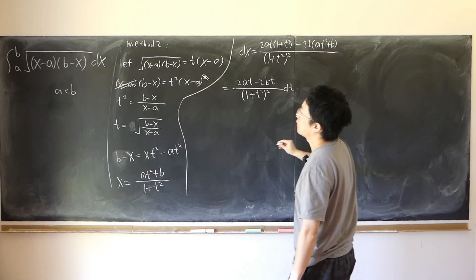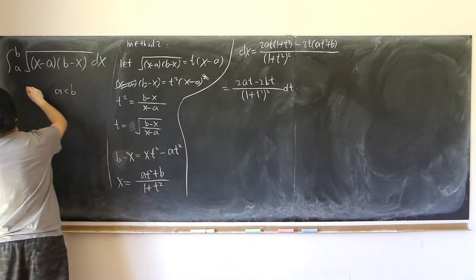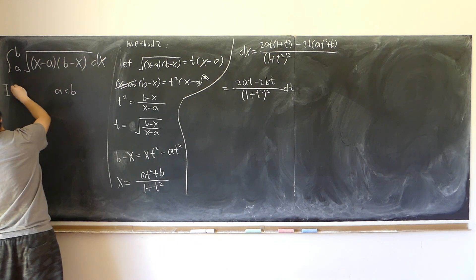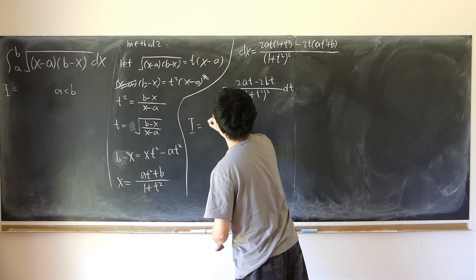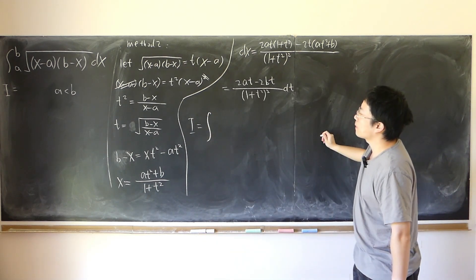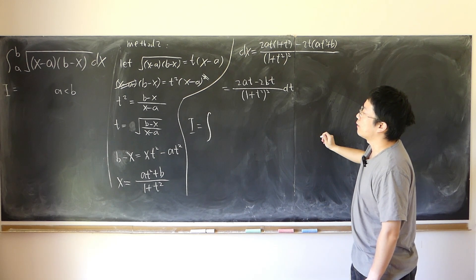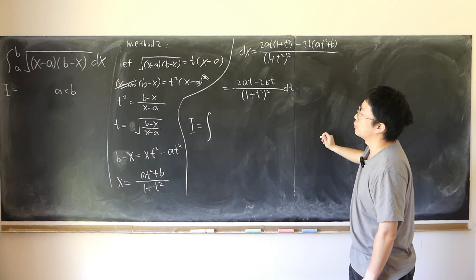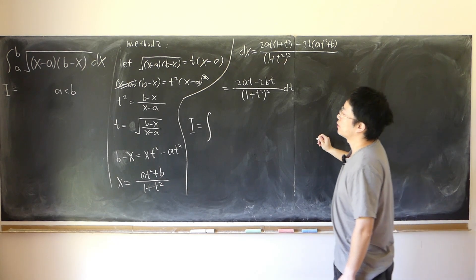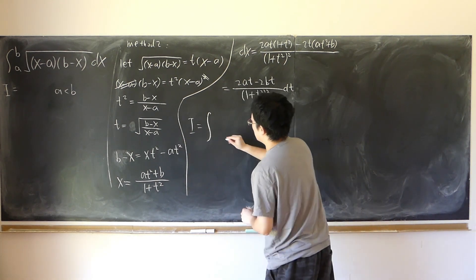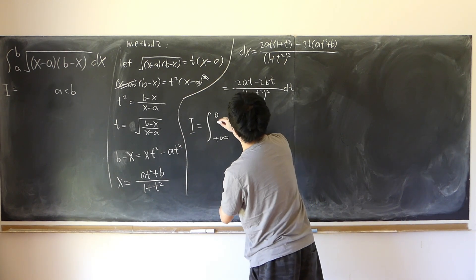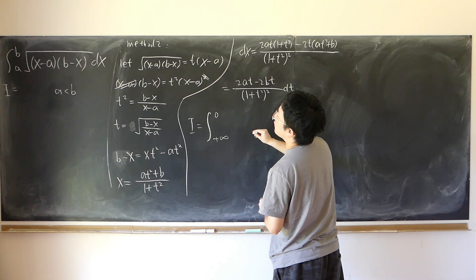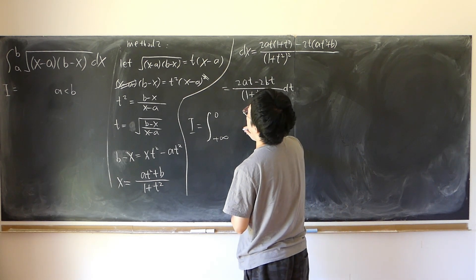Now set up the transformed integral. Change the boundaries: when x equals a, t equals positive infinity; when x equals b, t equals 0. The original integrand is t times (x minus a).